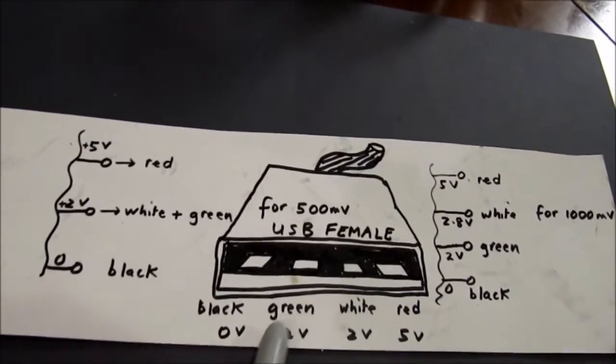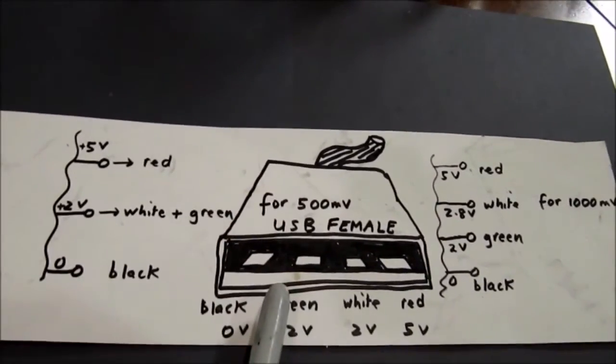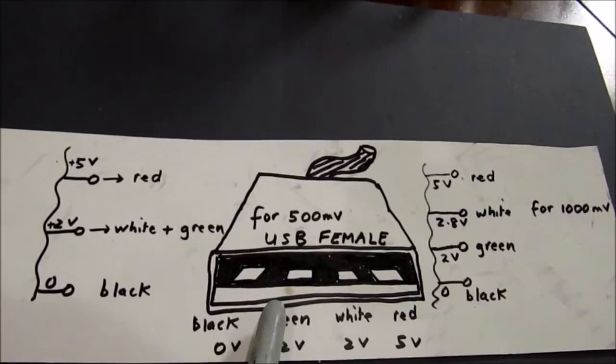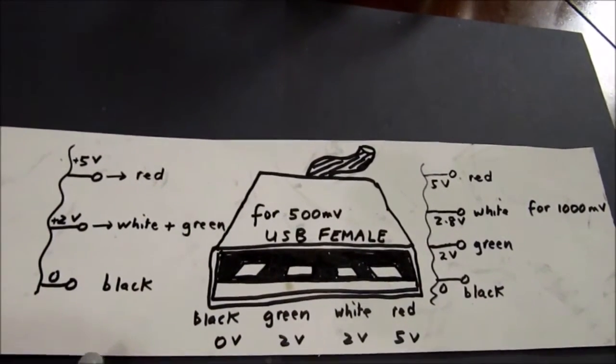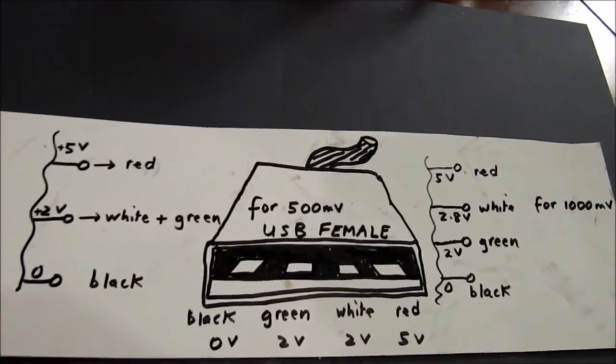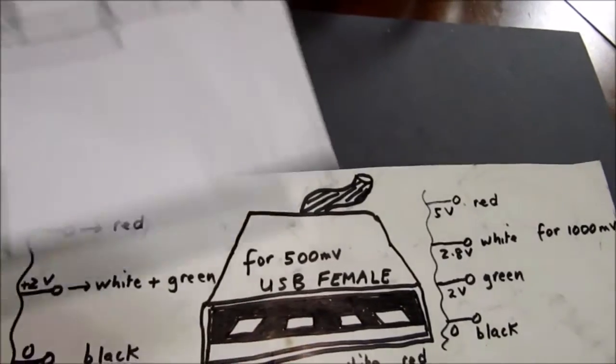And the data, which is green and white, is in the middle. Now if there was no voltage on the data, this would not work. So what you need to do is to have 2 volts on each of these to give you 500 millivolts of charging. And here's the output from our Joule Thief circuit here.